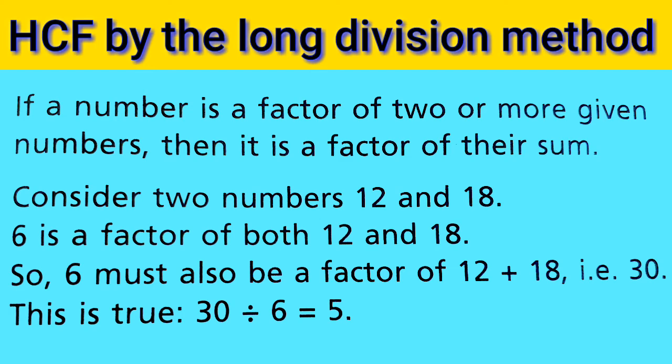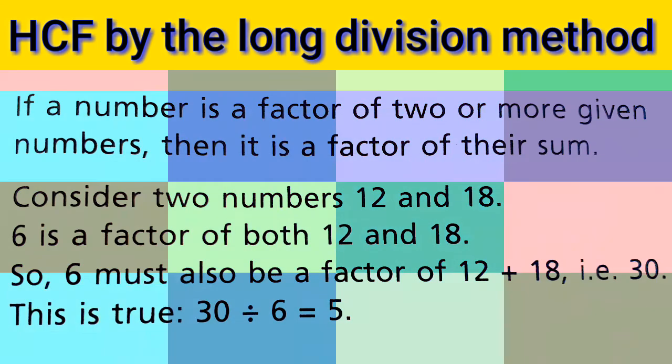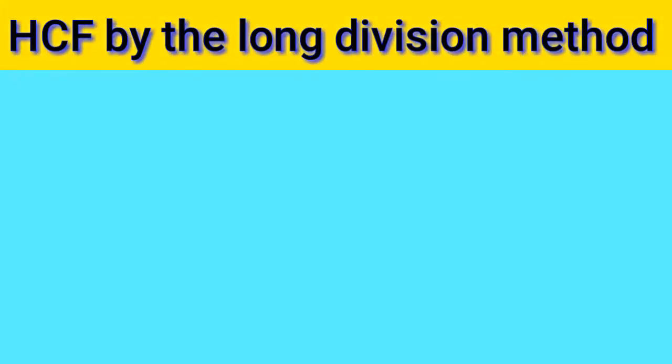Observe the given statement: if a number is a factor of two or more given numbers — which are 12 and 18 — and their sum is 30, then 6 is also a factor of 30. That is property number three.